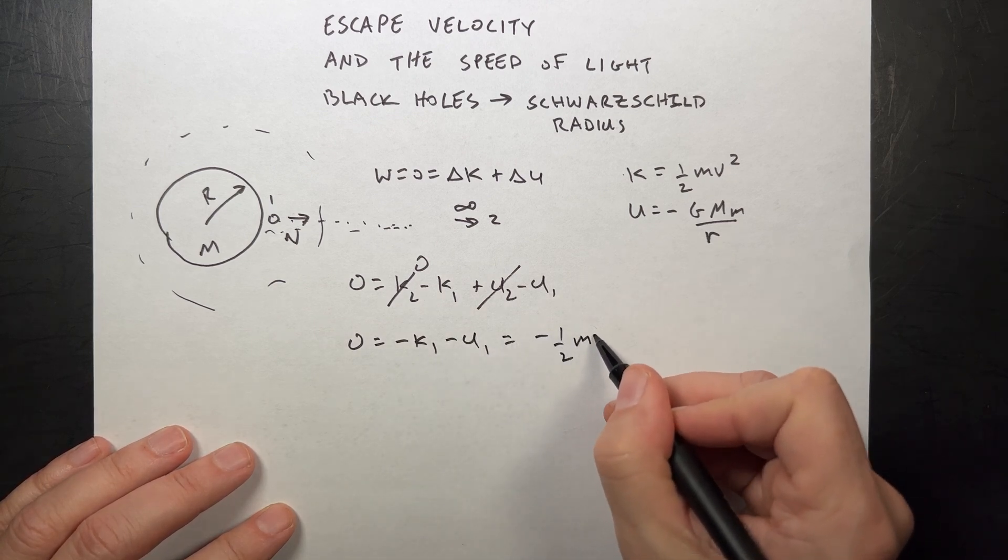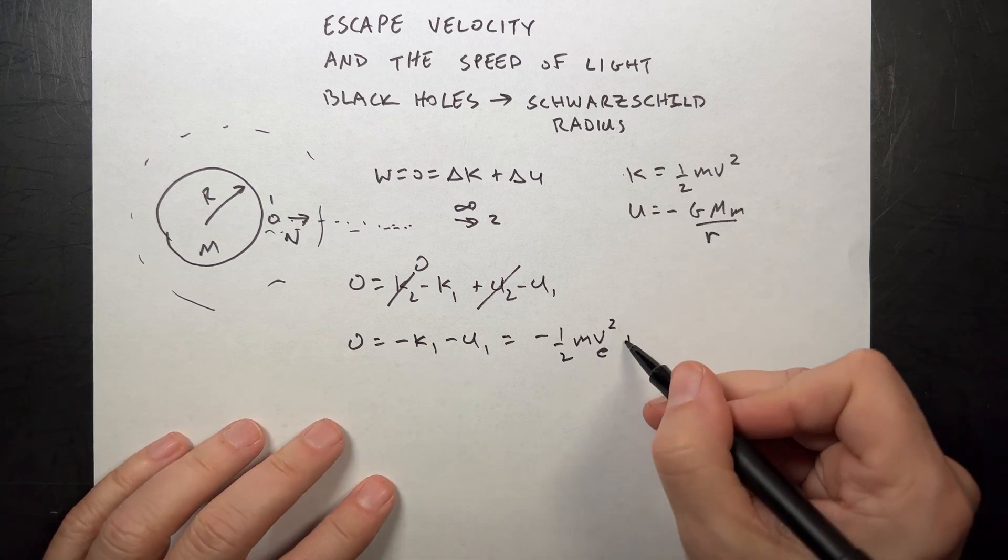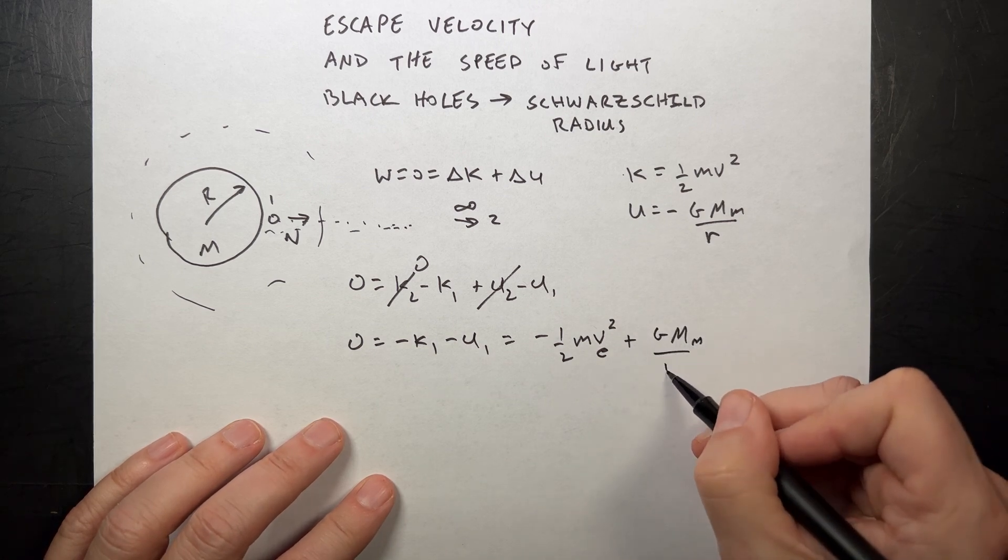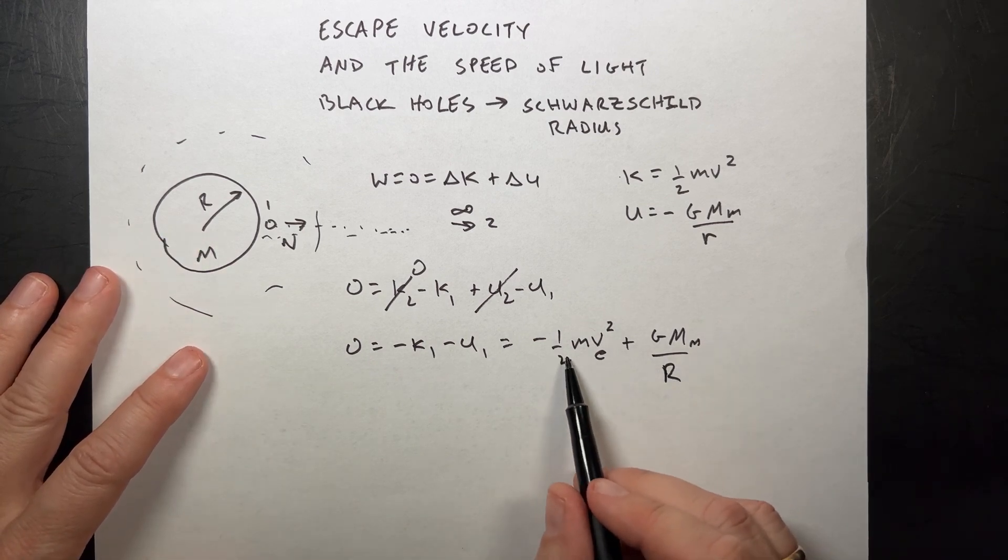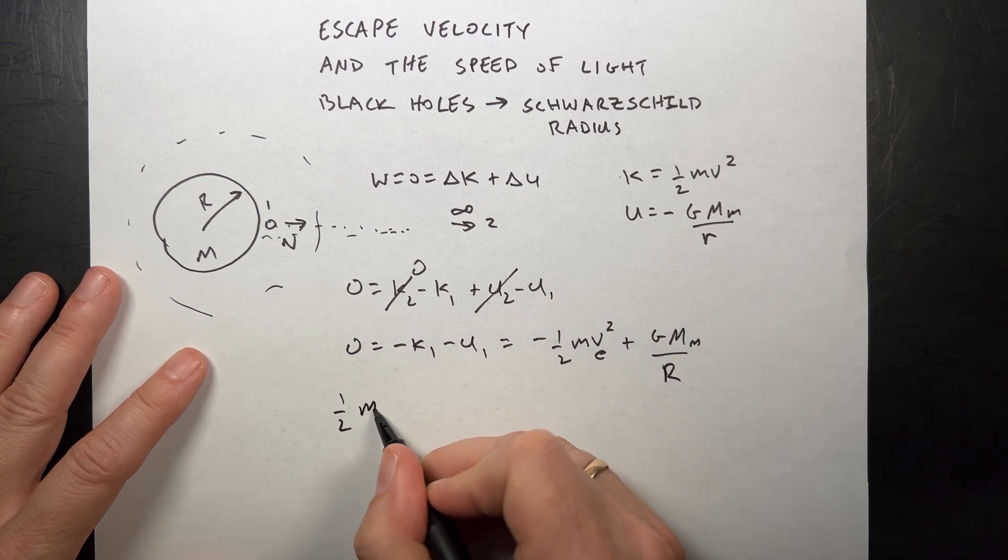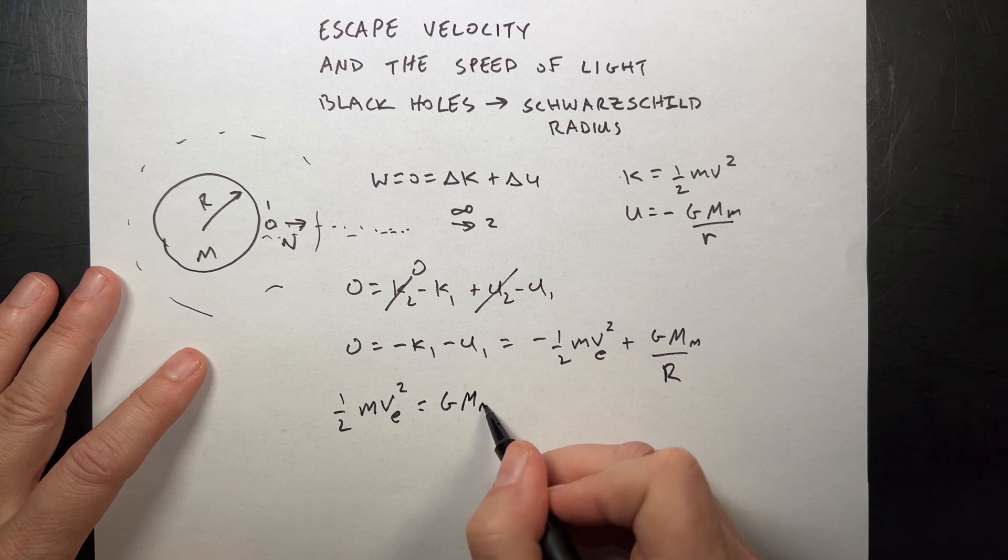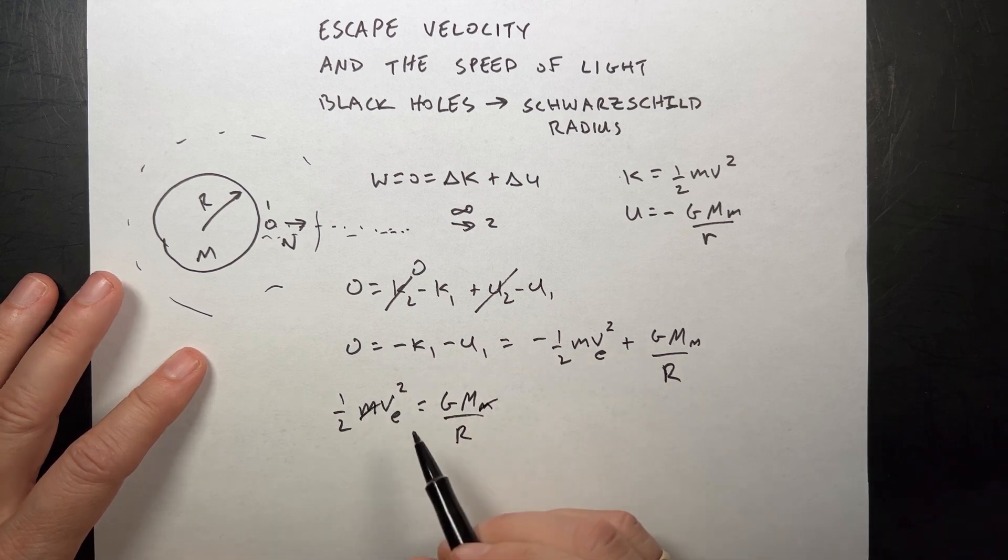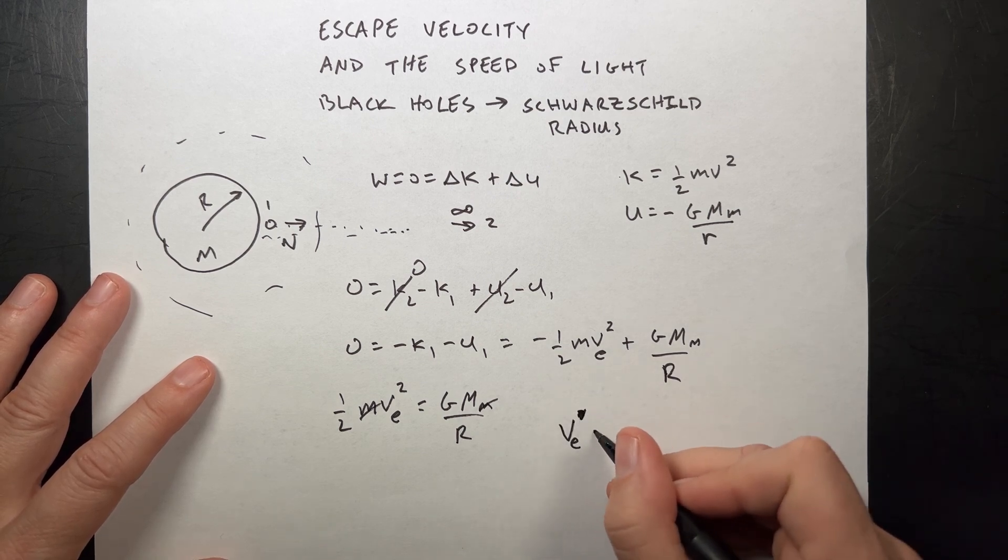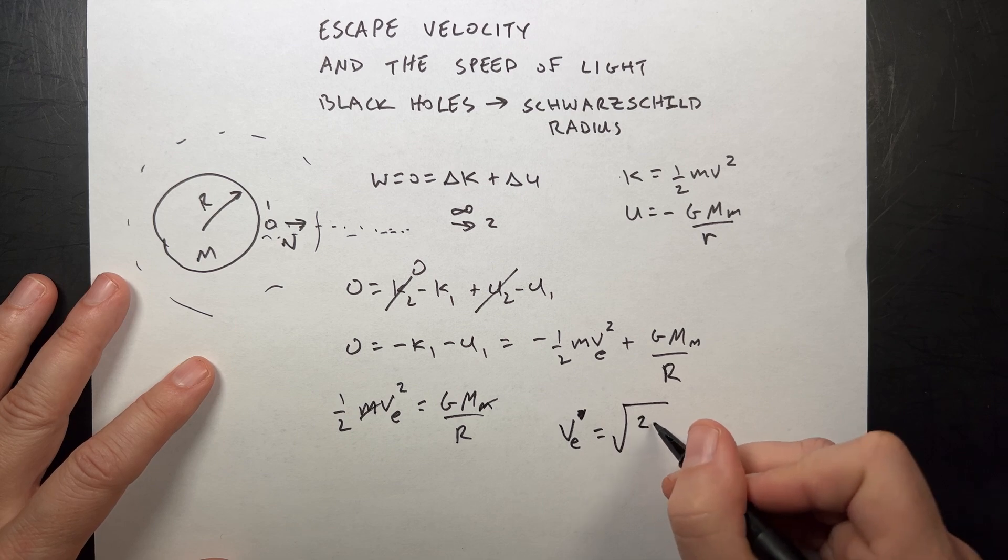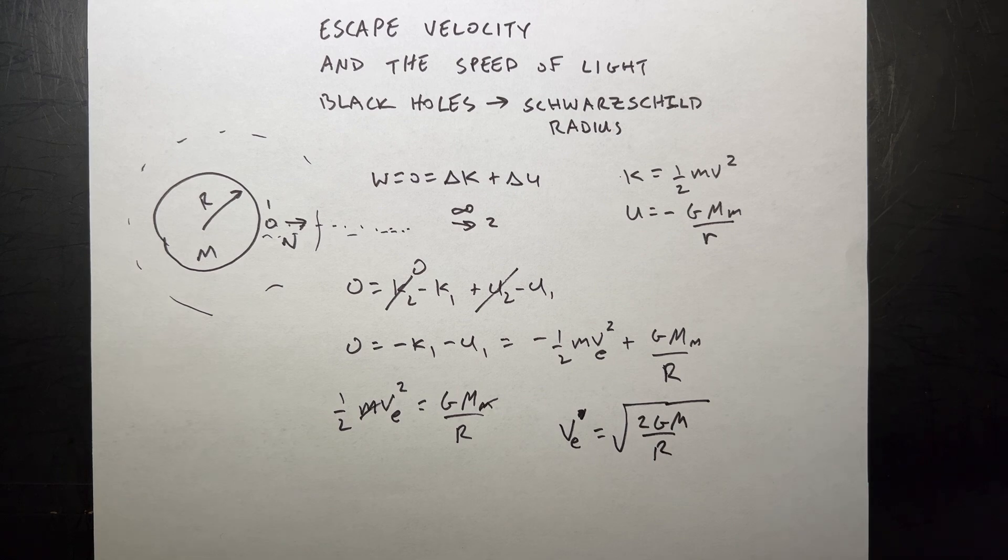Negative one-half m v_escape squared, minus this, so plus G mass over the radius of the Earth. We're starting with the radius of the Earth. So now all I have to do is just add this to the other side. One-half mass velocity squared equals G m m over r. The mass cancels. I can multiply both sides and take the square root. v_escape not squared is the square root of 2 G m over r. So we did that. We calculated that.